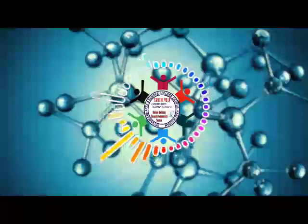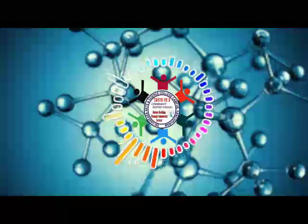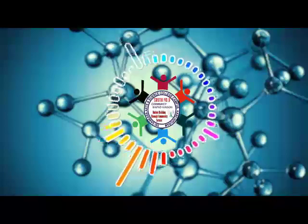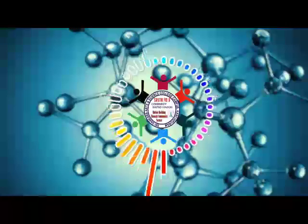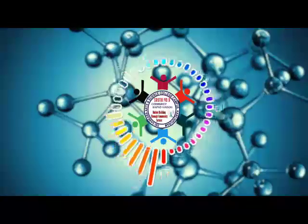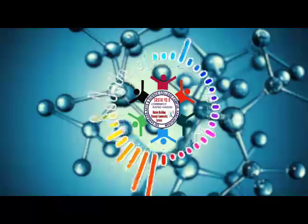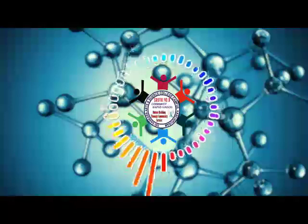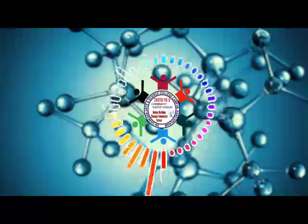Now we move on to domain wall energy, or Bloch wall energy. It is the sum of contributions from the exchange and crystalline anisotropy energy in the domain wall region. The thickness of the wall is approximately 1000 Angstroms. The boundary between two domains is known as a Bloch wall.